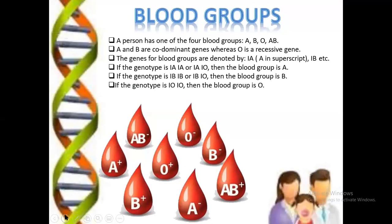Blood groups. A person has one of four blood groups: A, B, O, and AB. A and B are co-dominant genes whereas O is a recessive gene. The genes of blood groups are denoted by I^A and I^B, where I means alleles. If genotype is I^A I^A or I^A I^O, then the blood group is A. If genotype is I^B I^B or I^B I^O, then the blood group is B. If genotype is I^O I^O, then the blood group is O.